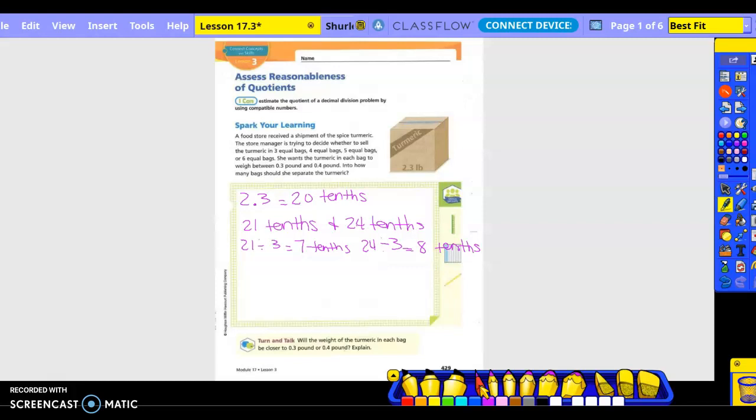I also heard that we could do, let's do with the fours. What would be closest to the four? So twenty tenths and twenty-four. So that would be twenty divided by four equals five tenths, right? And then twenty-four divided by four equals six tenths.